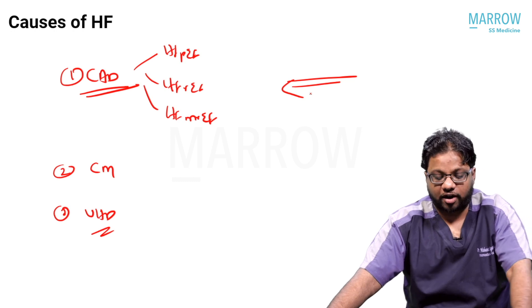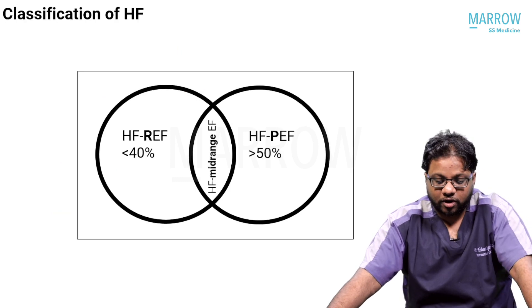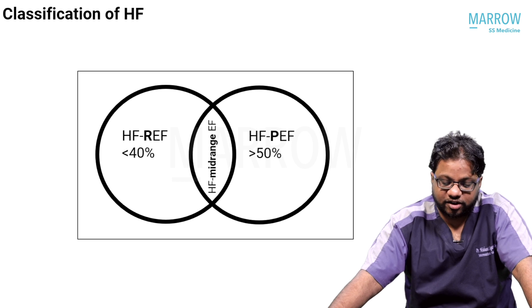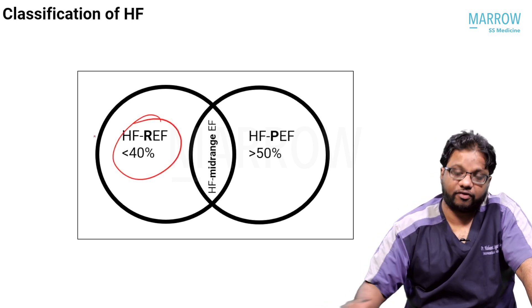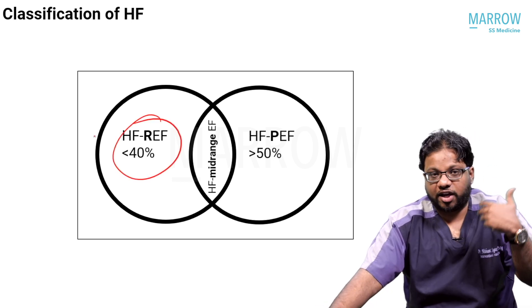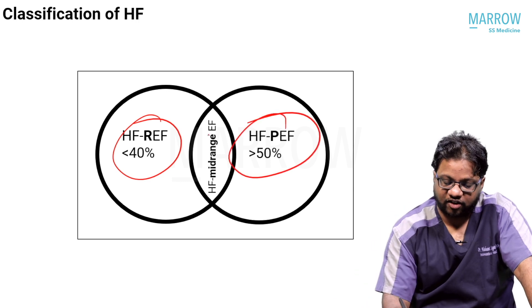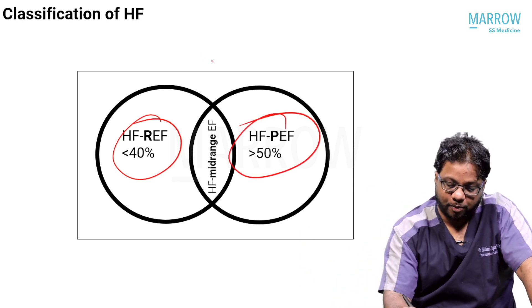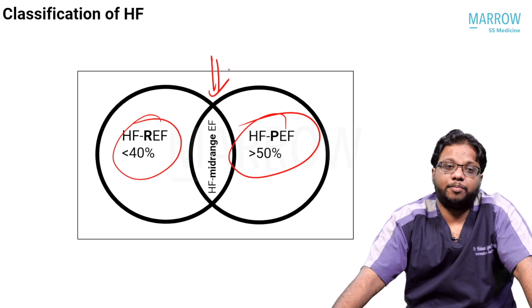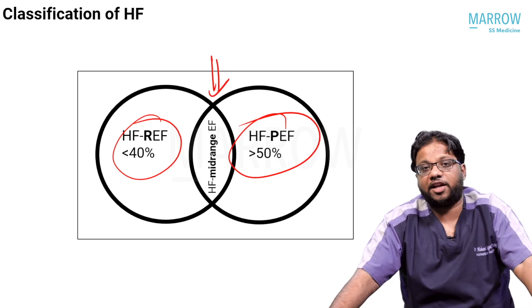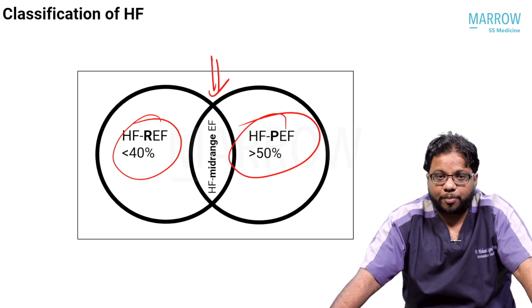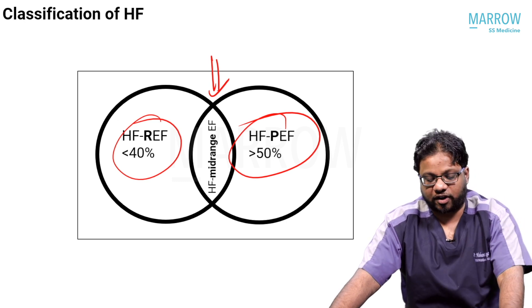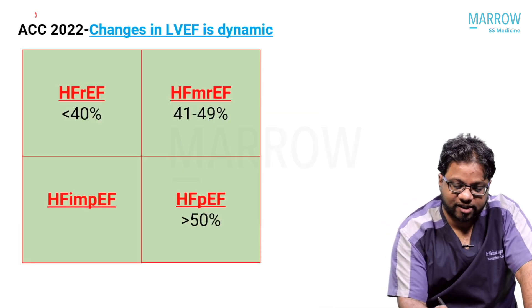How do you classify heart failure? The traditional classification: HFrEF — reduced ejection fraction with EF less than 40%; HFpEF — EF more than 50%; and a poorly defined group called heart failure with mid-range or mildly reduced ejection fraction. This is your traditional classification.